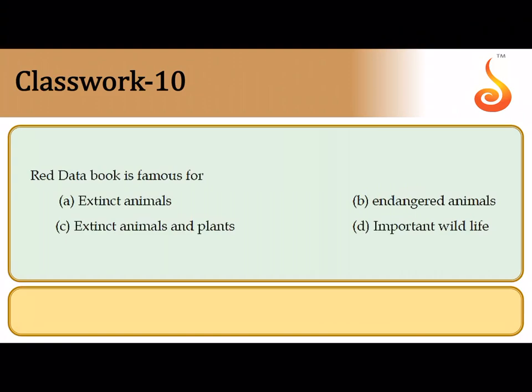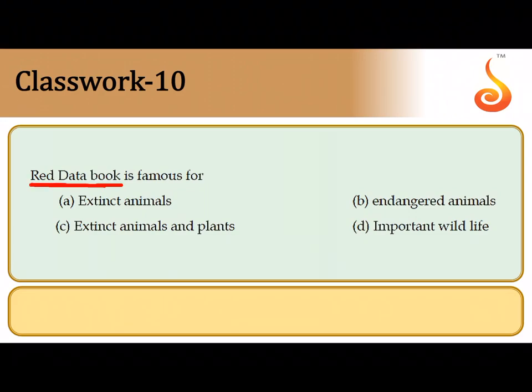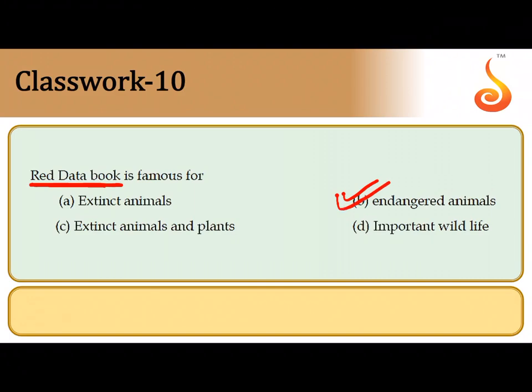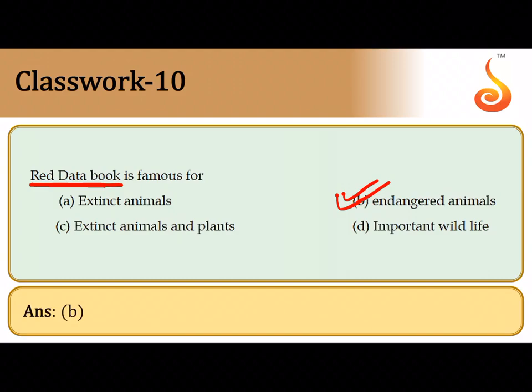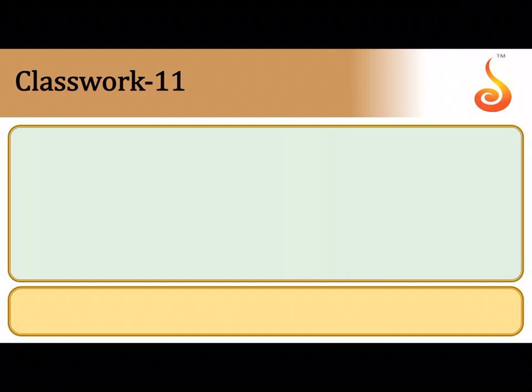The tenth question covers the Red Data Book. The Red Data Book is maintained by conservation unions such as the World Conservation Union. They maintain it to record all endangered animals and plants — basically all organisms currently facing a threat of extinction or in the category of the endangered group. So the correct answer is the second option.